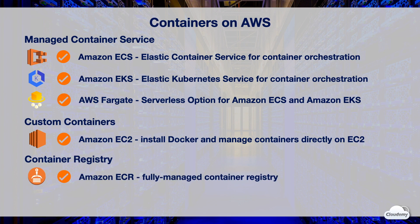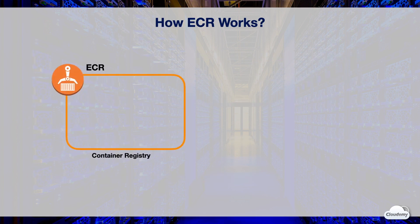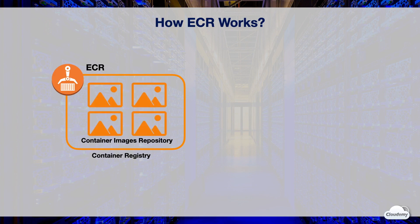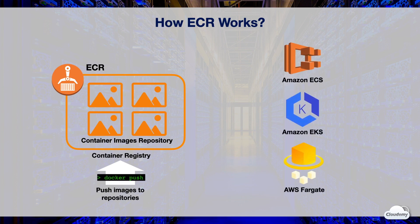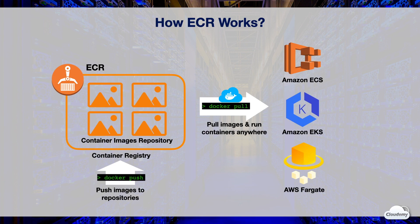Amazon Elastic Container Registry (ECR) is a fully managed container registry. Similar to Docker Hub, ECR lets you host your container images in the cloud and deploy them to AWS container services. You create a repository in your ECR registry and store container images there. You can build your applications as container images and push them using the push command. To deploy containerized applications, you pull these images from the repositories and deploy them to ECS, EKS, AWS Fargate, EC2 instances, or on-premises servers.